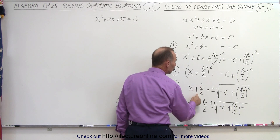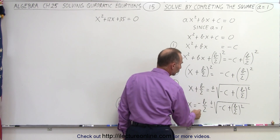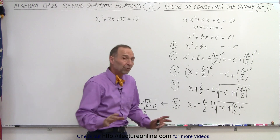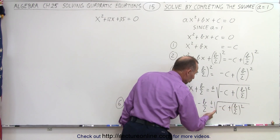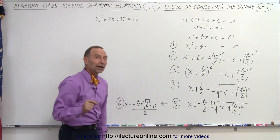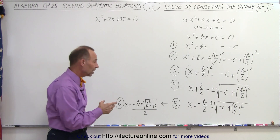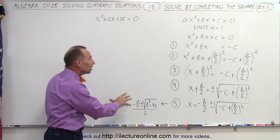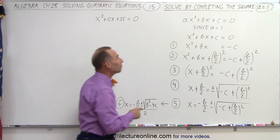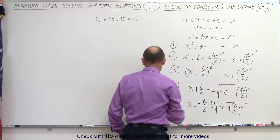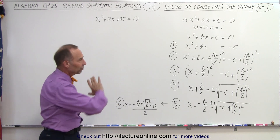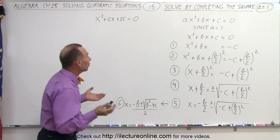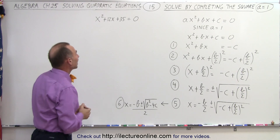Then we move the b over 2 portion to the right side, so we have x equals negative b over 2 plus or minus the square root of minus c plus b over 2 quantity squared. If we factor out a 2, you begin to see this is very close to the quadratic formula. The only thing missing is a. If a were part of this equation, we'd have the full quadratic formula with a not equal to 1. But since we use the special case where a equals 1, a is missing in the final format, showing how completing the square derives the quadratic formula.